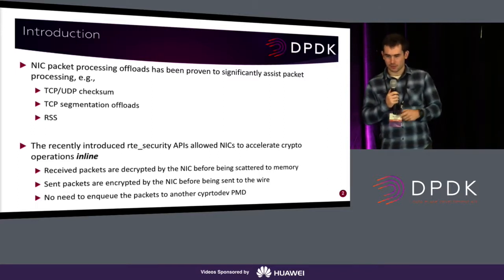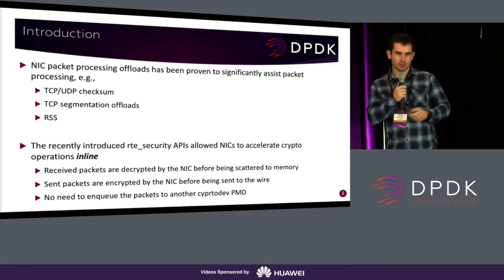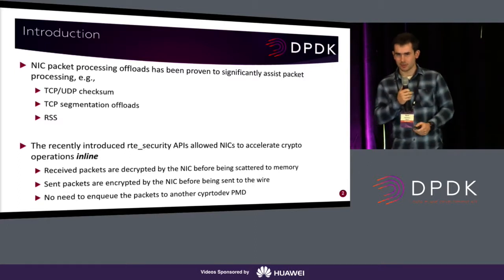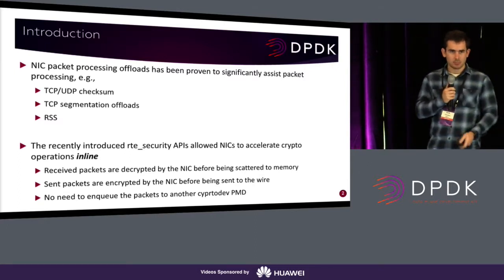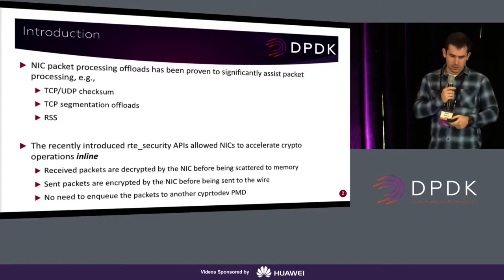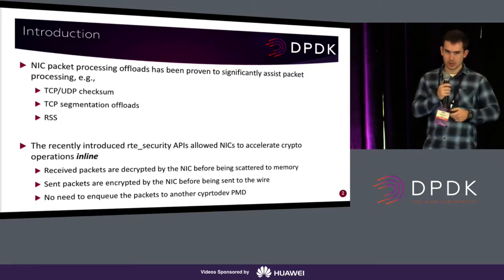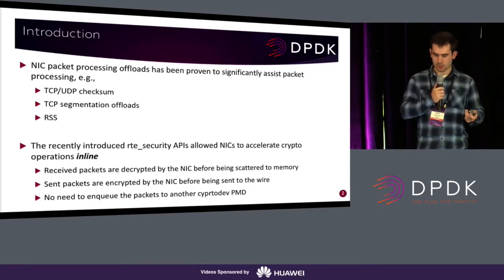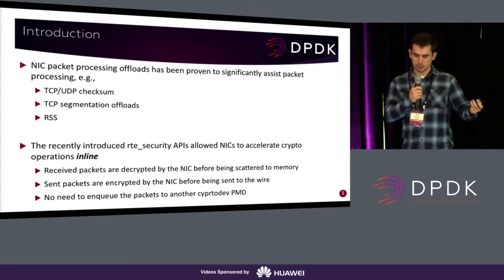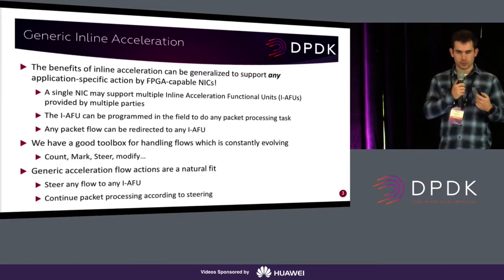NIC packet processing offloads have been proven to significantly improve performance, and we are constantly discussing how to integrate support for such offloads. Some offloads have been around for quite a while and some are new. Basic examples include checksum offload, segmentation offload, and RSS. Newer offloads such as IPsec inline were presented previously. IPsec inline and RT security are recent APIs introduced in 17.11 that allow for inline operations, where received packets are decrypted by the NIC as they are scattered to memory, and sent packets are encrypted by the NIC while being sent to the wire. This represents a new model: generic inline acceleration.